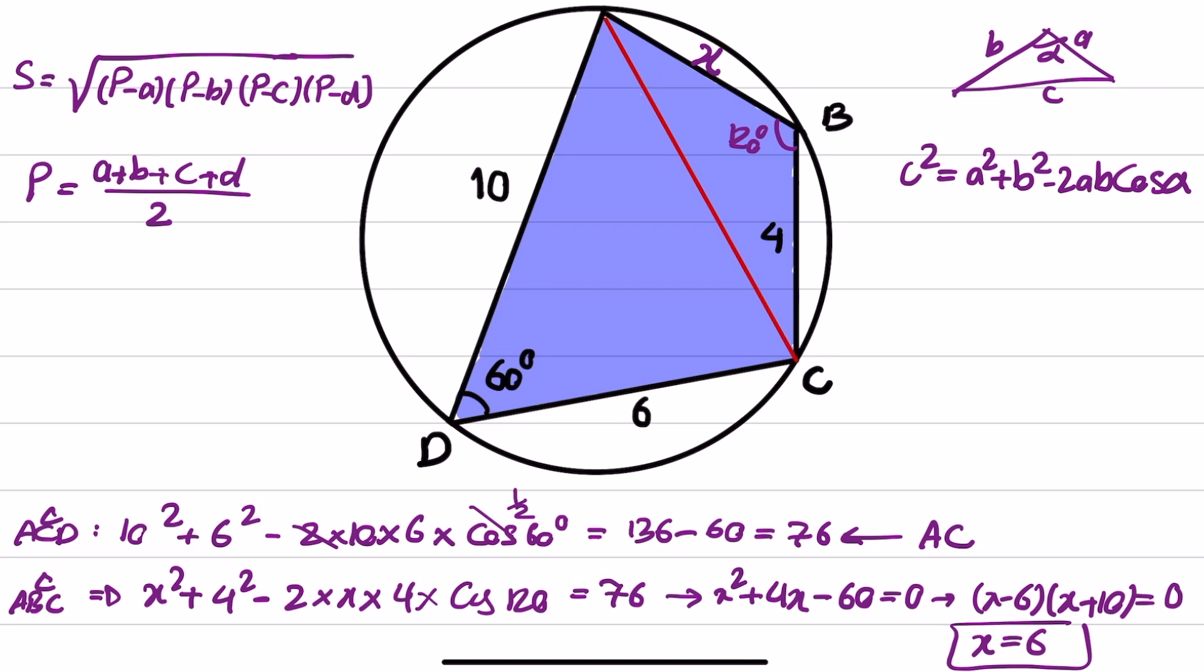And now we have x. We have to move to this equation. We know all the signs. And P will be equal to 10 plus 6 plus 4 plus 6 divided by 2. Therefore, this will give us, this will be 1026, 13. And if you calculate S by replacing P, you will get 21 times square root of 3.